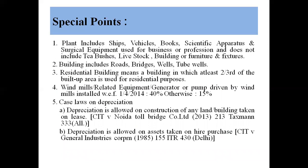The term 'plant' includes ships, vehicles, books, scientific apparatus and surgical equipment used for business or profession, but does not include tea bushes, livestock, buildings and furniture. 'Building' includes roads, bridges, wells and tube wells. A residential building is one in which at least two-thirds of the area is used for residential purposes. Mills-related equipment such as generators and pump drives used in mills are depreciated at 40%; otherwise the rate is 15%.